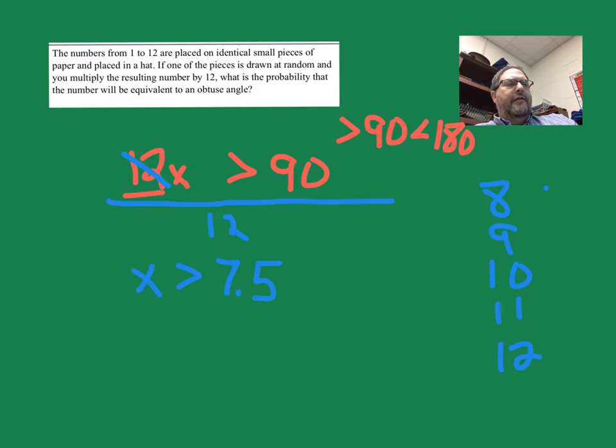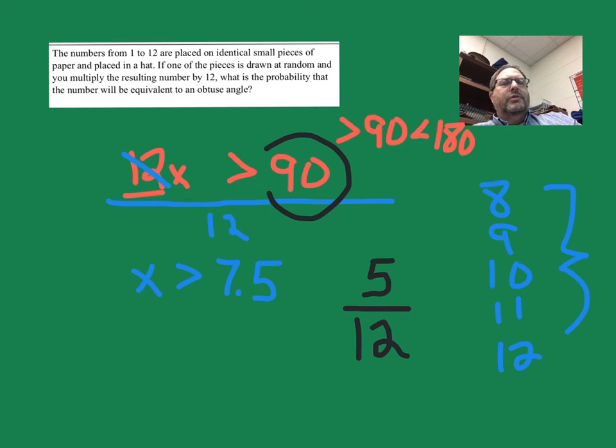How many numbers do you have here in this set? 5. How many total numbers are in the set? It's 12. So 5 out of every 12 times you dip your hand into that hat and pull out a number, you should get the number that when you multiply it by 12 is bigger than that obtuse angle.